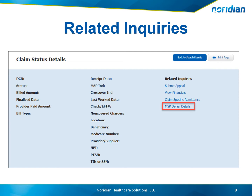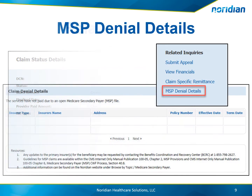By choosing the link, the portal will display the applicable information. For MSP denial details, the portal will display the insurer type, insurer's name, address, policy number, effective date, and term date. Below that, the following resources are provided: the phone number for the BCRC for updates, IOM references, and a reference to the MSP topic page at Neridia Medicare.